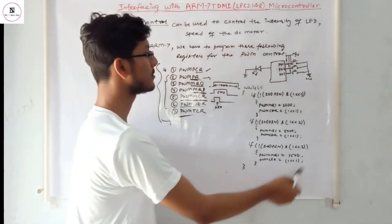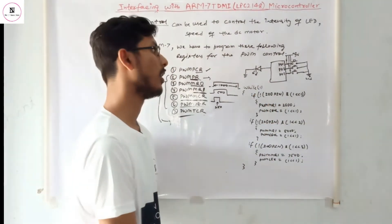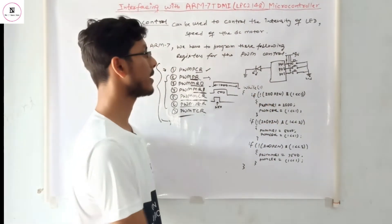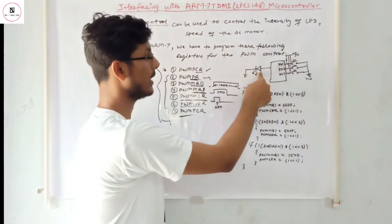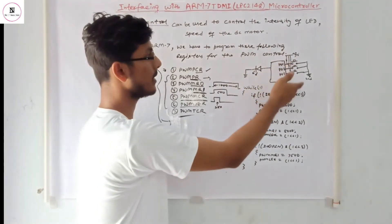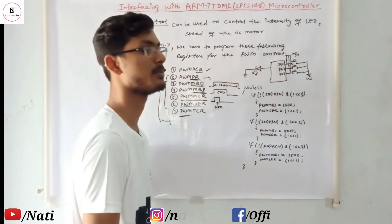In this way we can control the intensity of the LED. Similarly, we can connect a DC motor in place of the LED and control the speed of the DC motor in the same way.